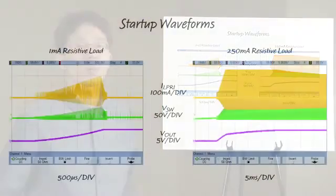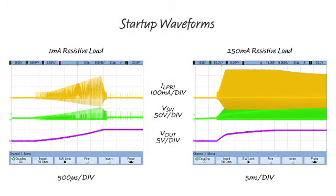Let's take a look at the startup waveforms. The graph on the left shows a 1-milliamp resistive load startup, and the graph on the right shows a 250-milliamp resistive load startup. The 2.7-millisecond internal soft start timer smoothly ramps up switch current limit and switching frequency, thereby producing no voltage overshoot on the output.